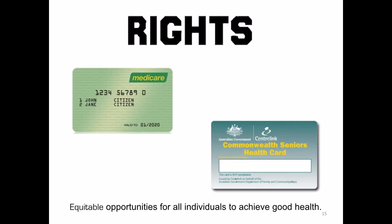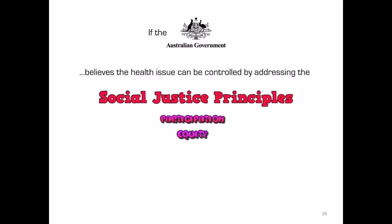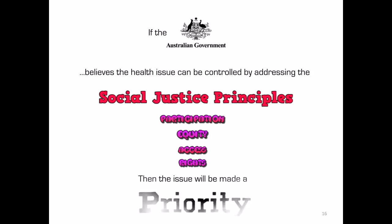Rights is the fourth social justice principle, and this is about an entitlement to health care or basic education. Medicare provides that right — every person has the right to access their local GP. There is also a Commonwealth Seniors Health Card, which allows more access for the elderly community. Rights provides equitable opportunities for all individuals to achieve good health. If the Australian Government believes a health issue can be controlled by addressing the social justice principles of participation, equity, access, and rights, then the issue will be made a priority.